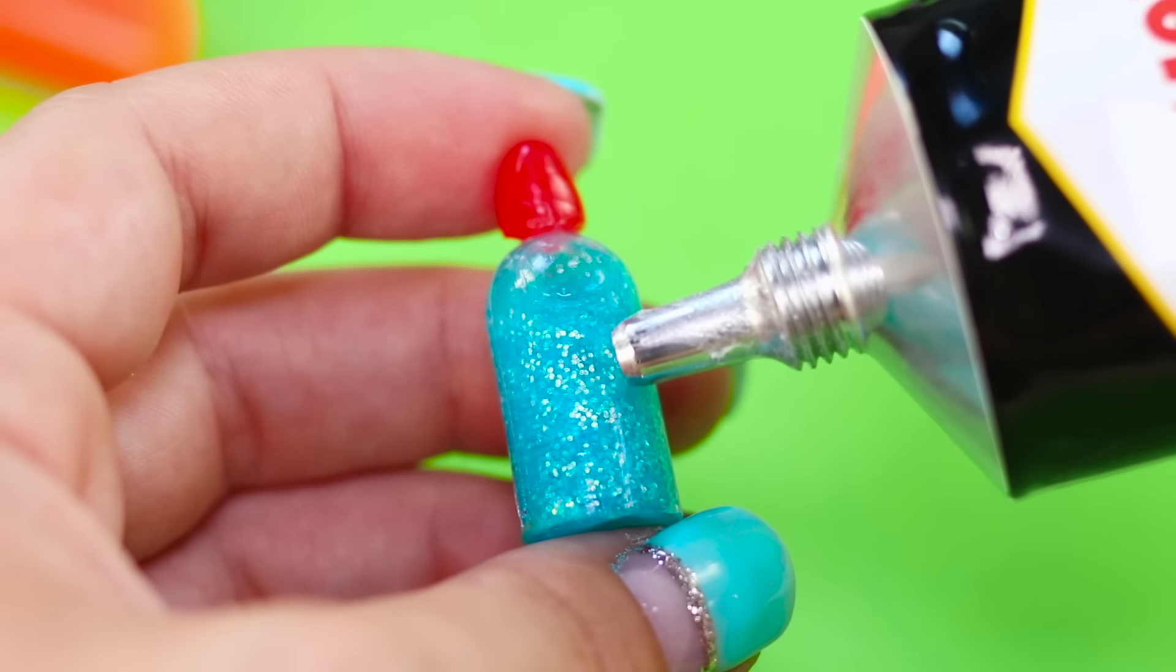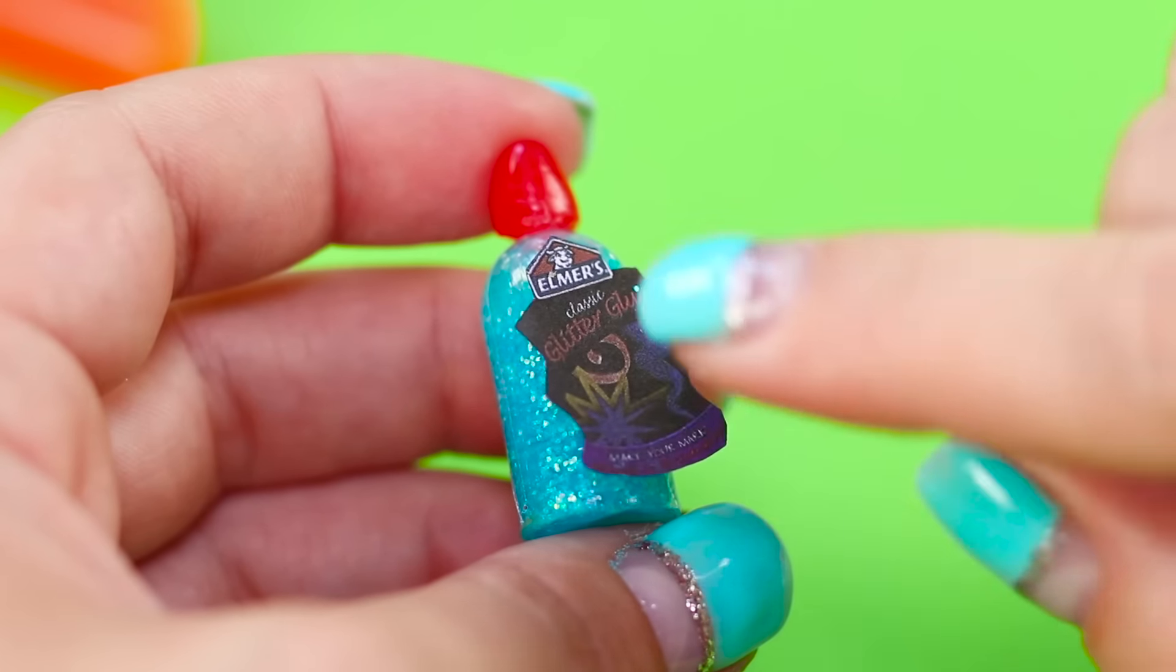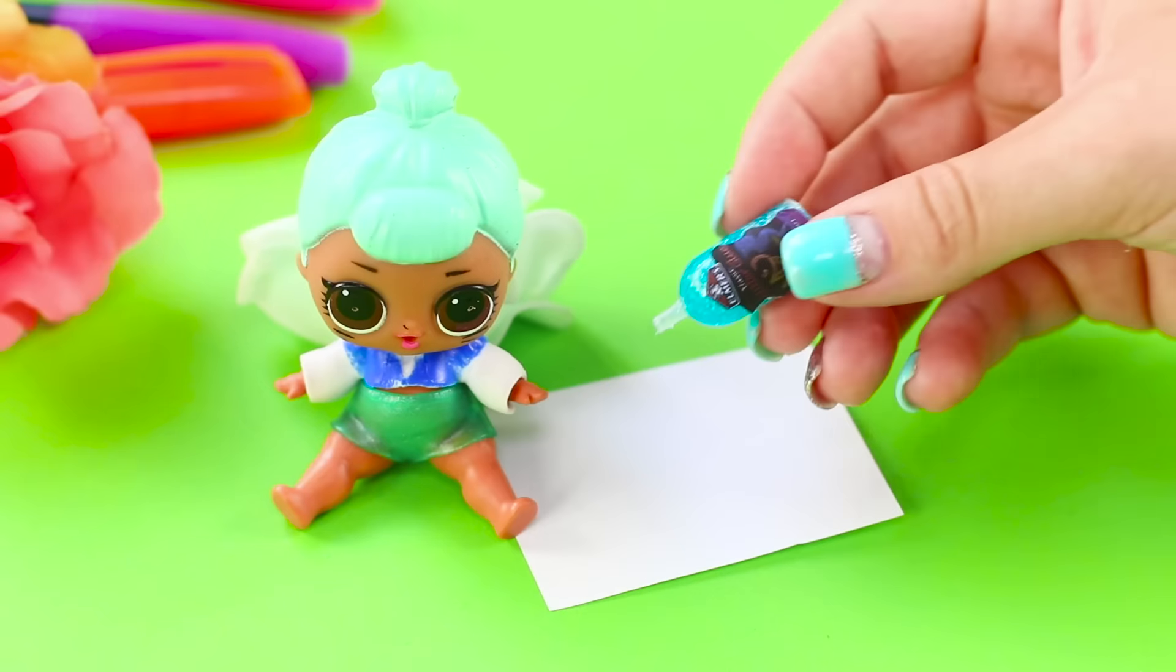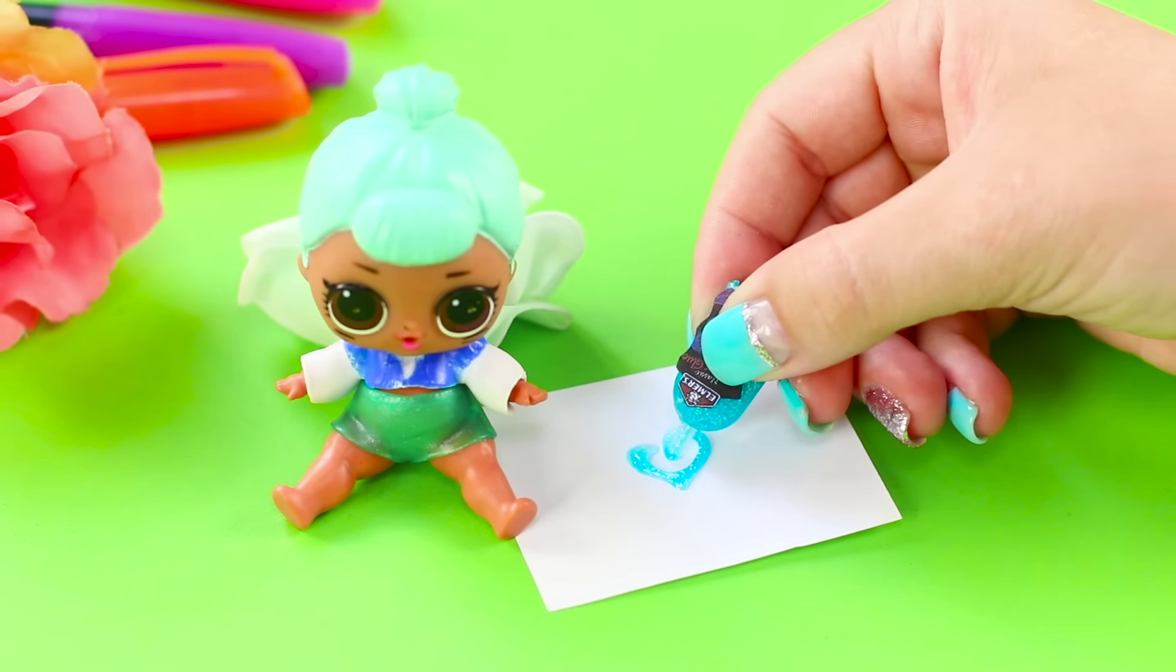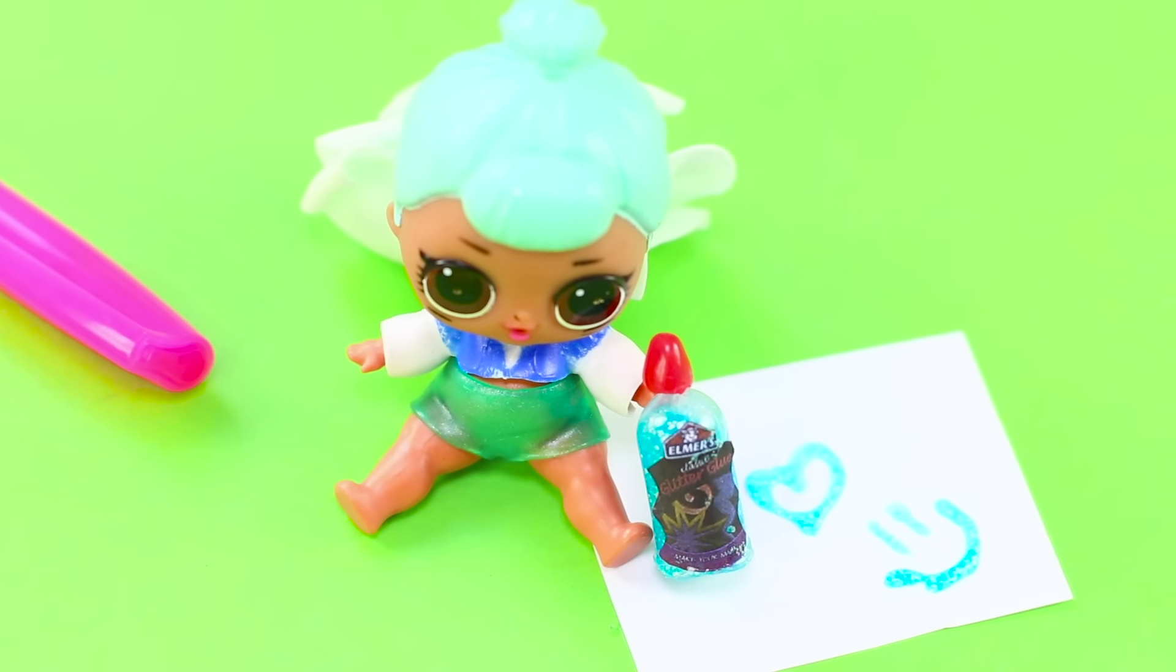Put the cap on the tube, attach a label, and you're done! Glitter glue makes your life brighter, and the doll likes it very much!